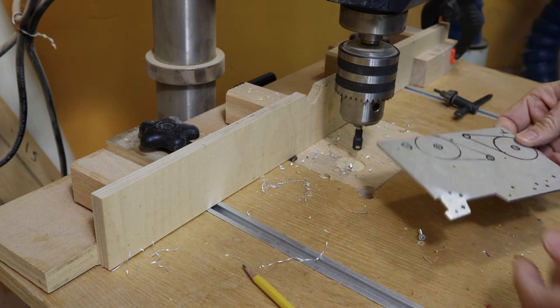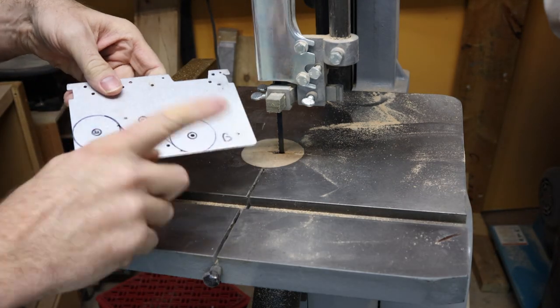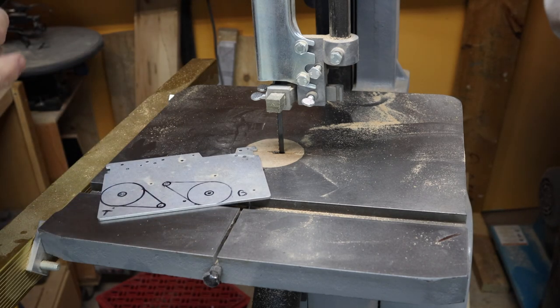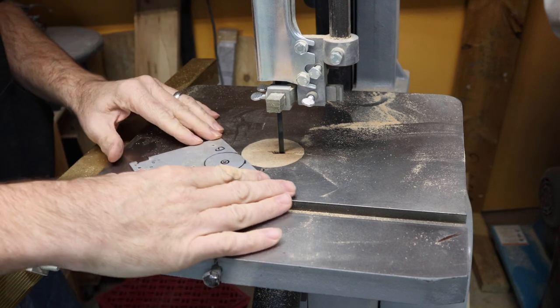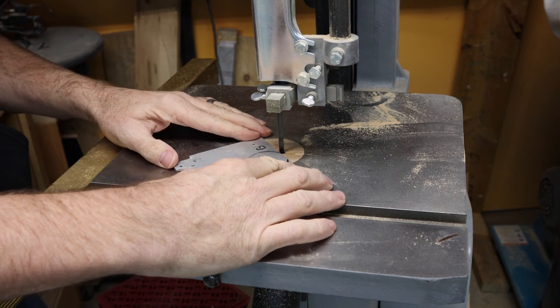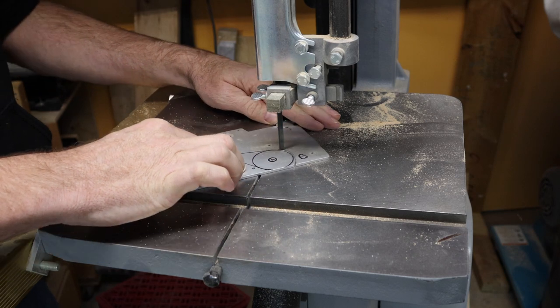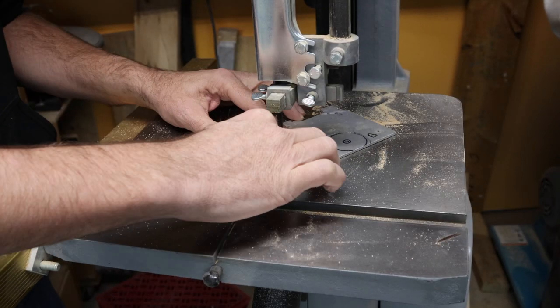Now I think we can cut it out. So you can cut this quite simply on your hacksaw if you want to. I'm going to use my bandsaw because again aluminum is very soft metal and it should cut out.